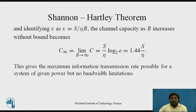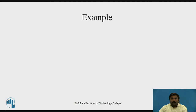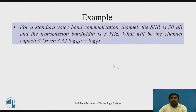This gives the maximum information transmission rate possible for a system of given power but no bandwidth limitations. Now let's see one example. For a standard voice-band communication channel, the SNR is 30 dB and the transmission bandwidth is 3 kilohertz. What will be the channel capacity? The given data includes that 3.32 log base 10 of A equals log base 2 of A, which will be useful in the calculation.